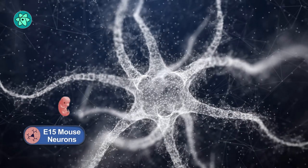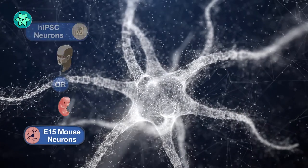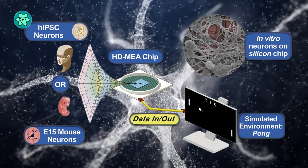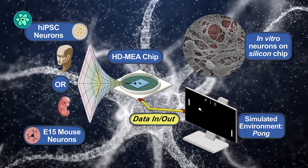The research team took mouse cells from embryonic brains and some human brain cells derived from stem cells and grew them on microelectrode arrays that could both stimulate them and read their activity.